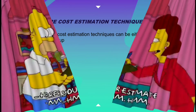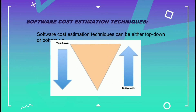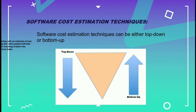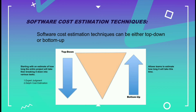Software cost estimation techniques can be either top-down or bottom-up. Top-down techniques start with an estimate of how long the entire project will take, then break it down into various tasks — these include expert judgment and Delphi cost estimation. Bottom-up techniques allow teams to estimate task durations individually — these include work breakdown structure and COCOMO.